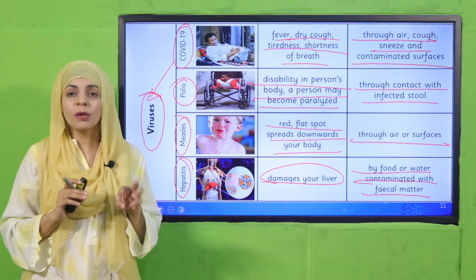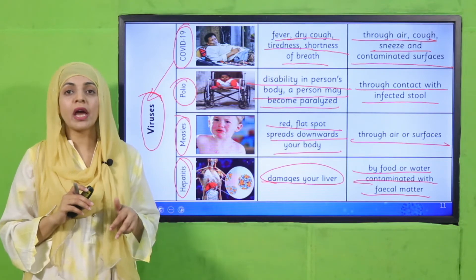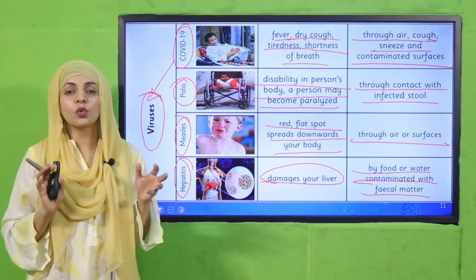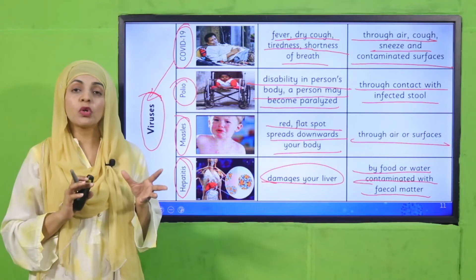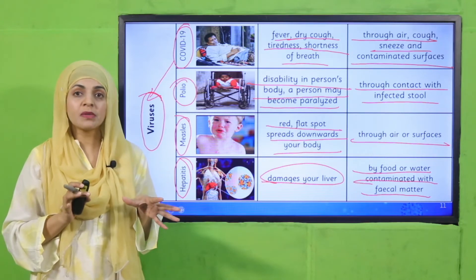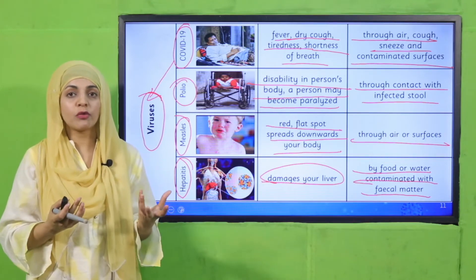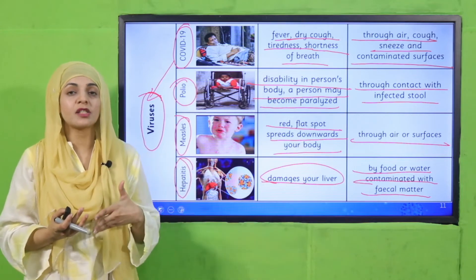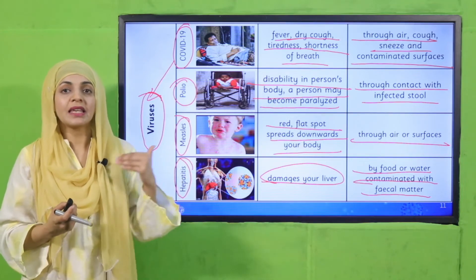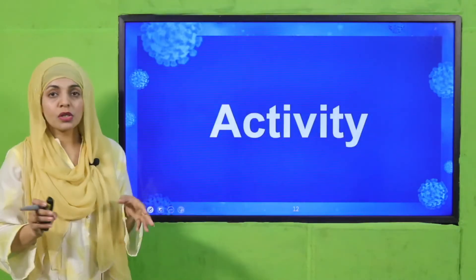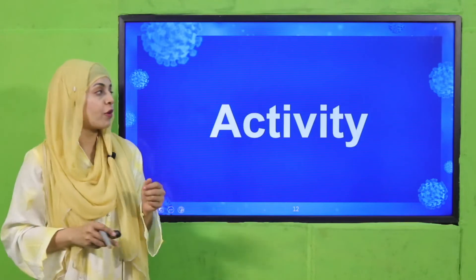So we have now discussed three pathogens: bacteria, virus, and fungi. They cause different diseases in humans, each with different symptoms and different modes of transmission — that is, different ways they enter our body.